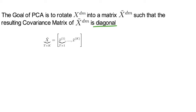So mathematically it means that X tilde dm looks as follows, and the constraint is that sigma tilde, which is 1 divided by T, X tilde dm transpose times X tilde dm, is diagonal.